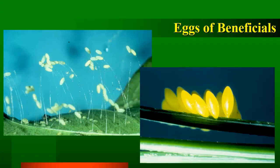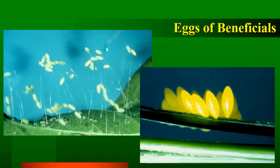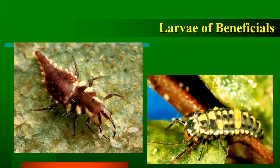Recognizing these beneficial insects at their different stages is important, because if you don't recognize them, you might destroy them accidentally. Here we have two different examples of eggs of beneficial insects. One is a green lacewing — that's the one on those tall, silken stalks. They lay their eggs on those stalks because the larvae of the green lacewing are opportunistic, and the first one to hatch would eat the other eggs before they hatched if they were all laid on the surface of the leaf together. The other cluster of eggs there is a cluster of lady beetle eggs. If you don't recognize those eggs, you might accidentally destroy them.